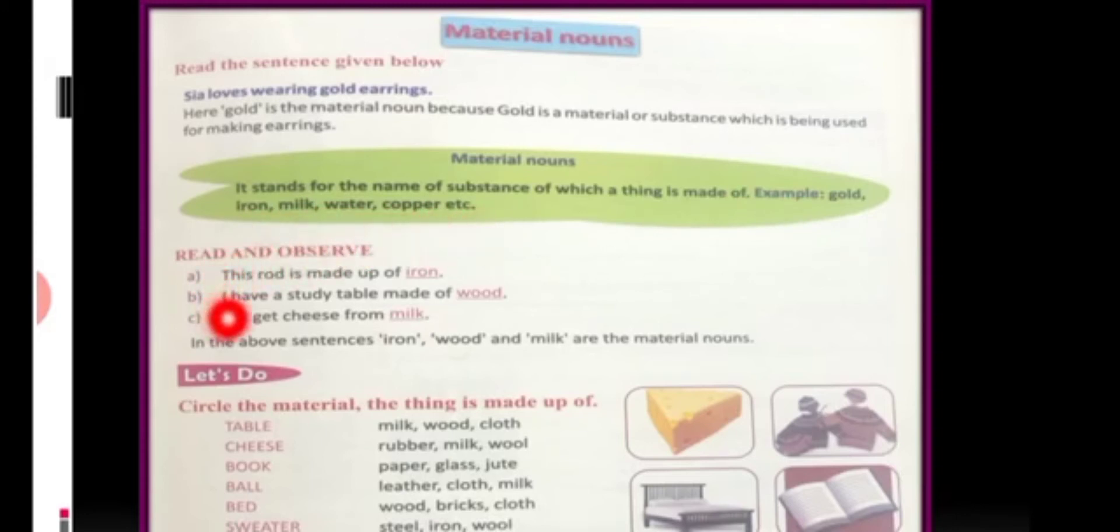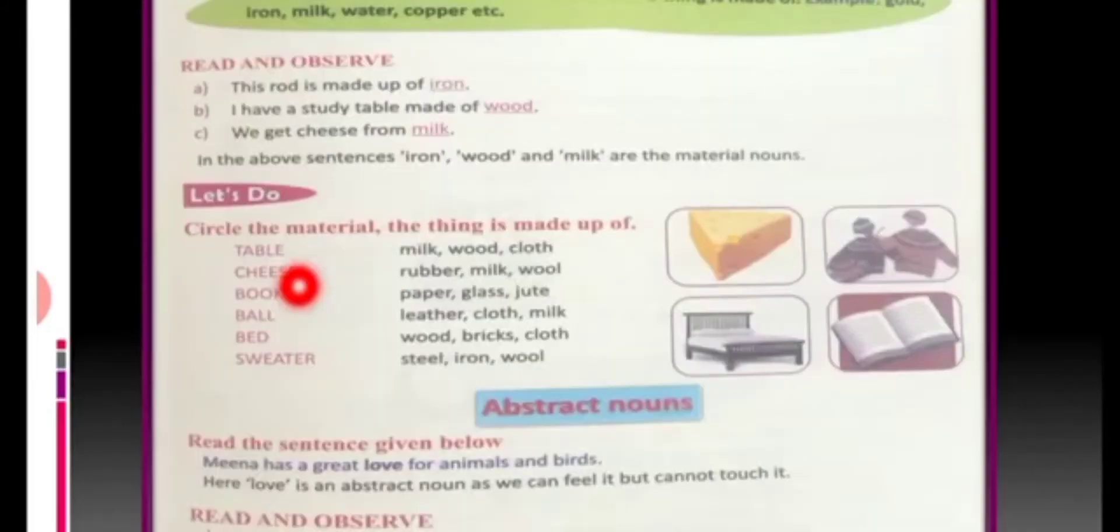More examples are there. This rod is made up of iron. So, the material used to make the rod is iron. So, iron is the material noun. Now, I have a study table made of wood. Wood is the material used to make study table. C part. We get cheese from milk. From what are we making cheese? That's milk. So, milk is the material.